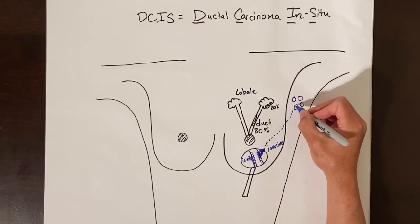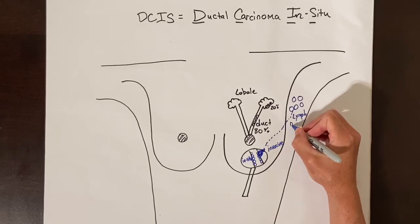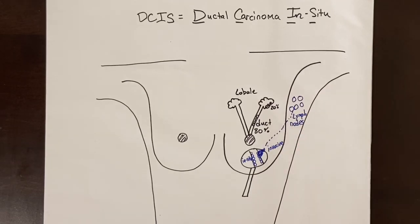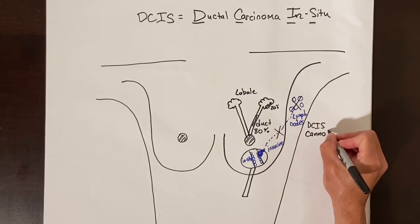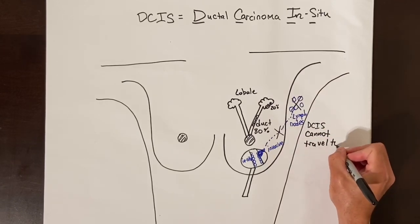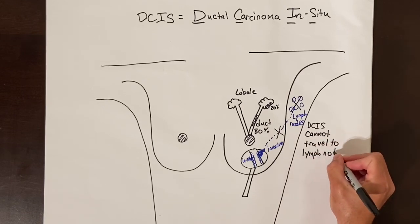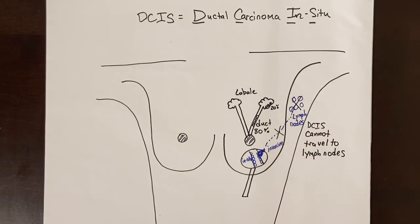Because there are no lymphatic channels or blood vessels inside of the ducts, DCIS cells cannot travel from the breast to lymph nodes and cannot spread. They are stuck in the duct, which is why I tell women these are precancerous, because by definition the bad cells cannot get out of the breast to cause harm.